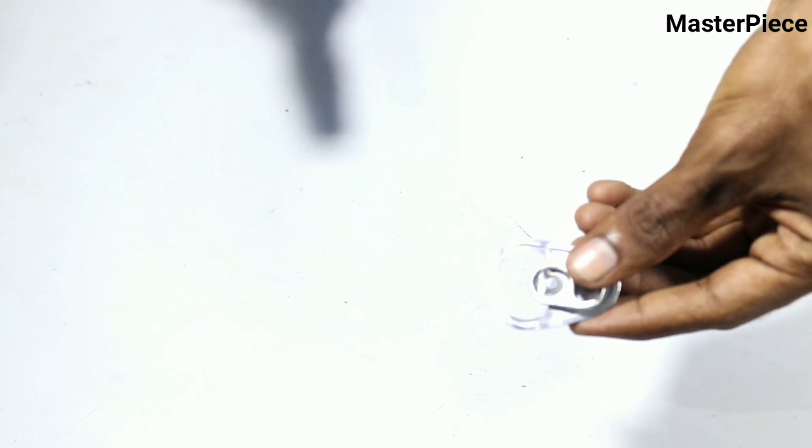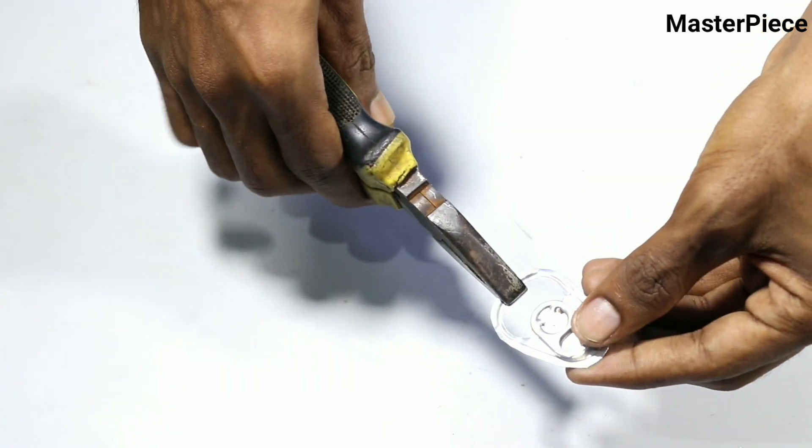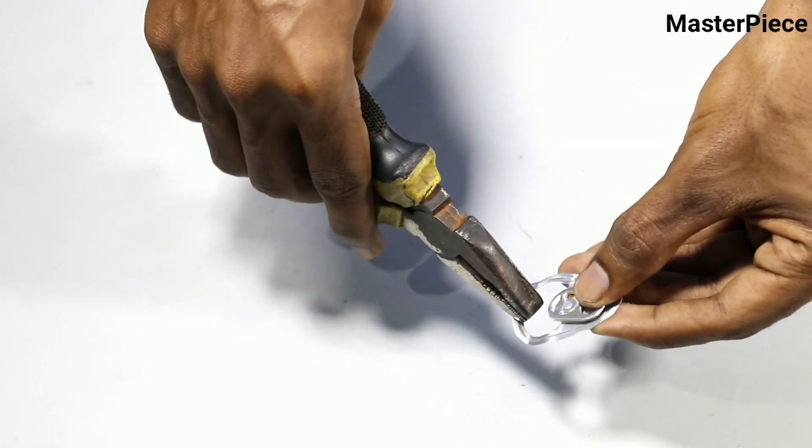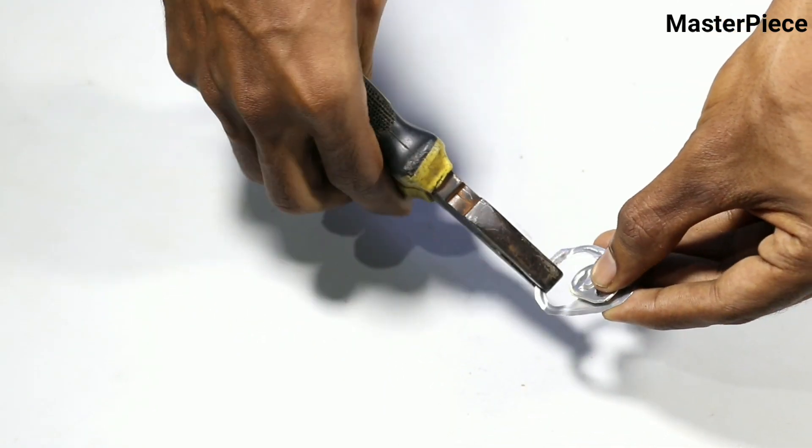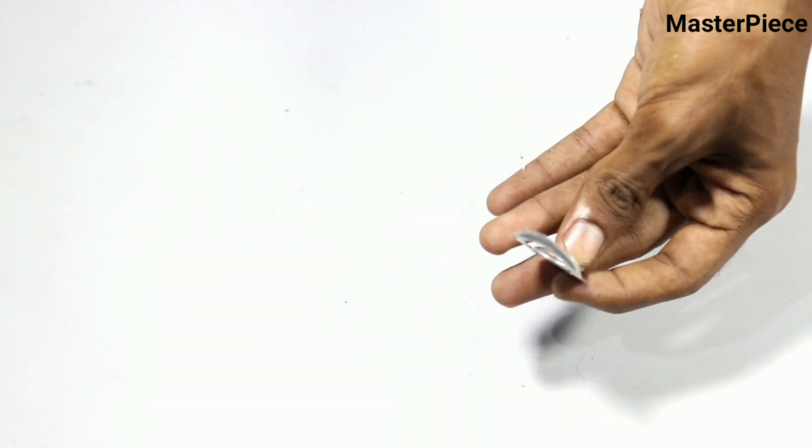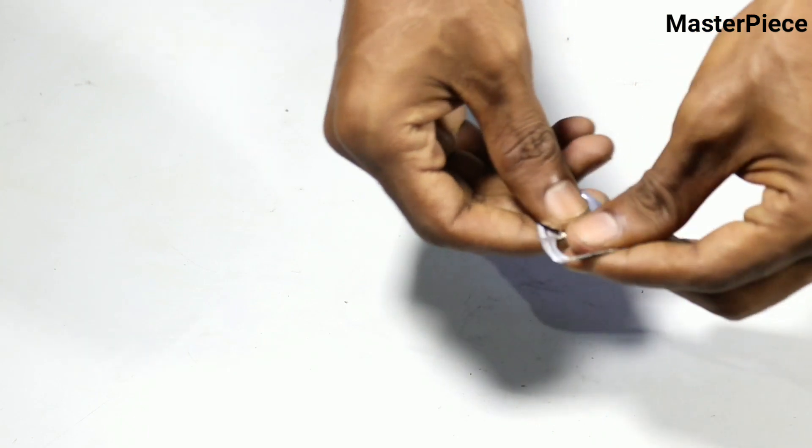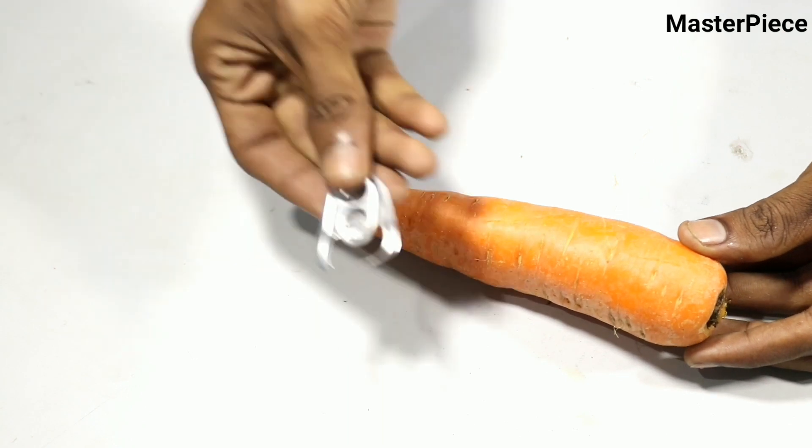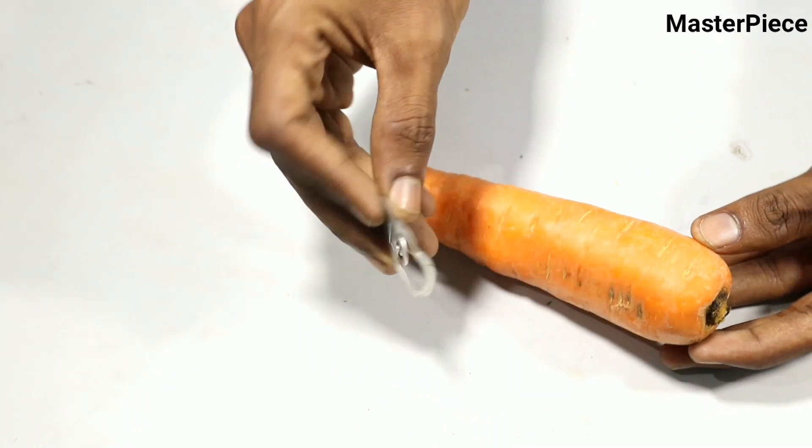The next step is to try to get a fish in the water. Now we need to get a fish in the water. This is a very easy way to catch the fish. I am using this to make sure that it works very easily.